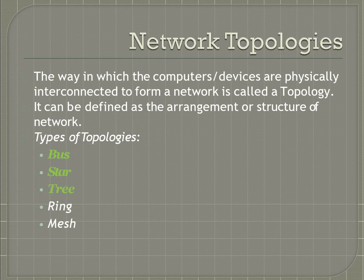The function of a point-to-point link is to send and receive data over a network. In a point-to-point network, each workstation receives data from only one transmitter, and each transmitter transmits data only to one receiver. It is the simplest way to install a link between each pair of computers over a network.